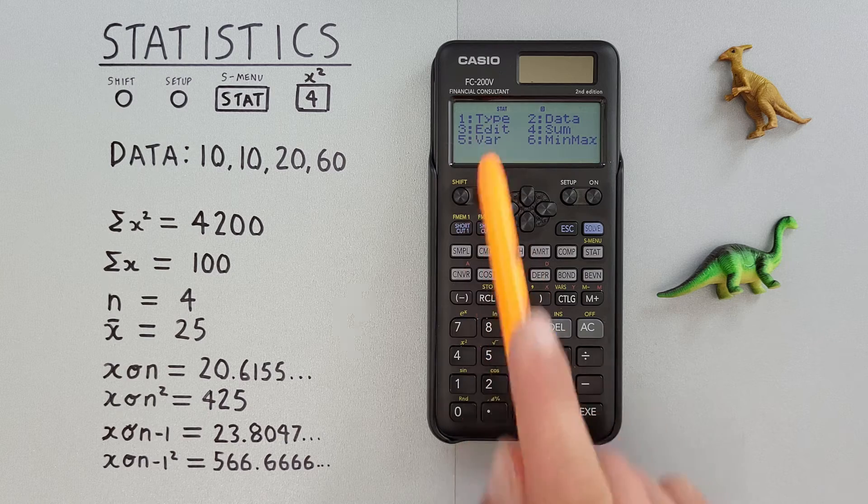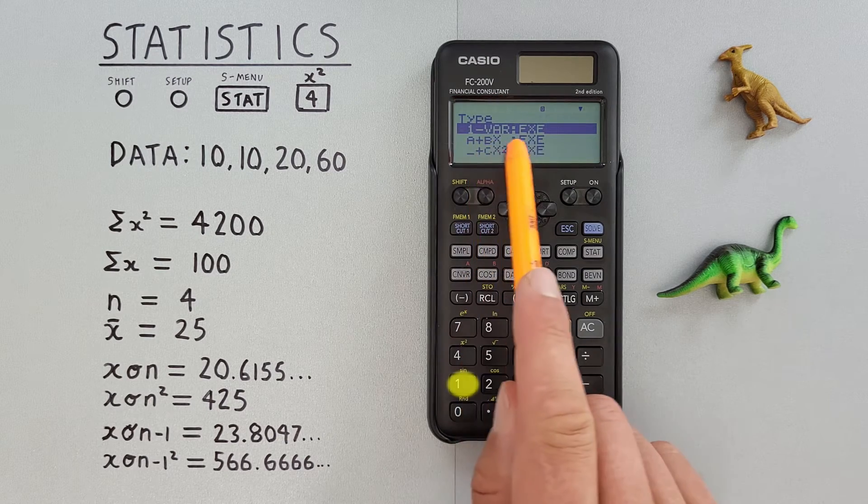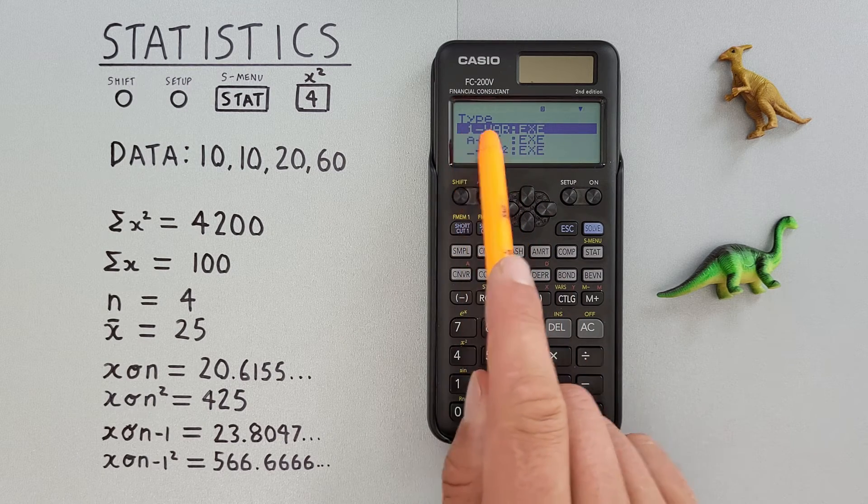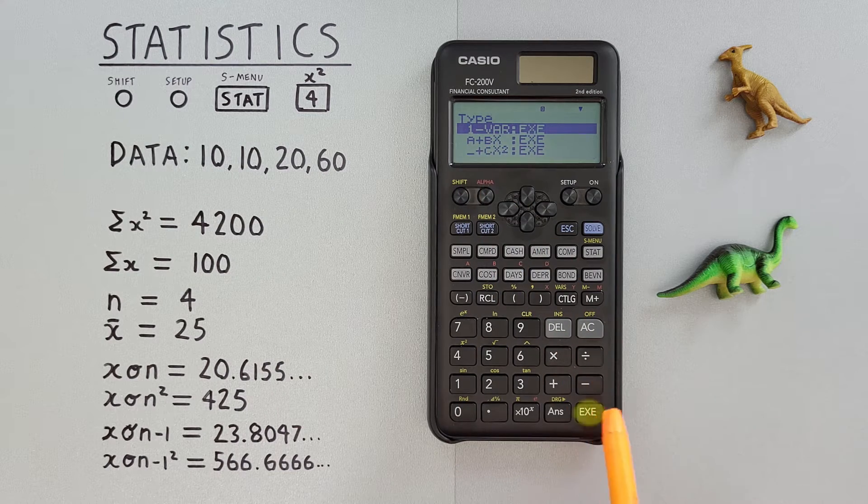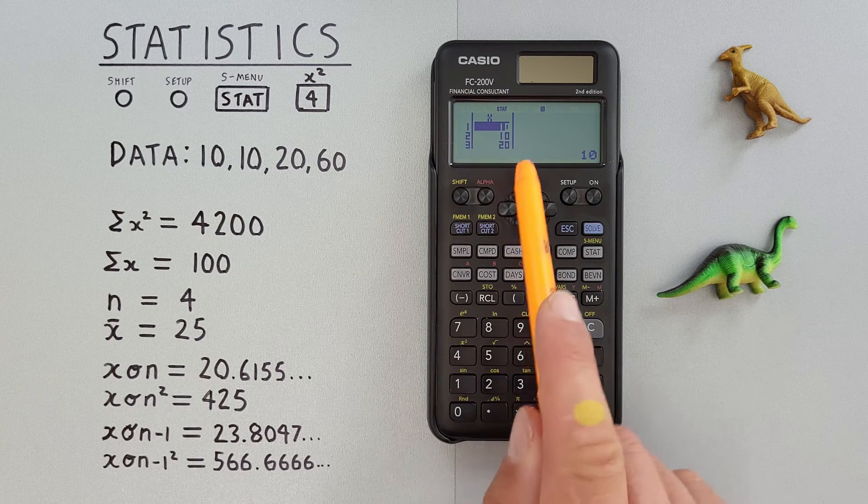Our first option is number one, type. That'll just confirm our STAT type, which number one is one variable, that's what we're using. And again, brings us to our list.